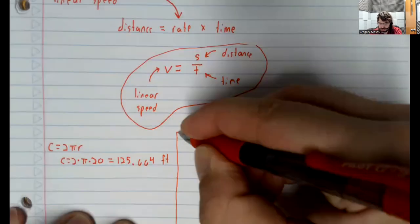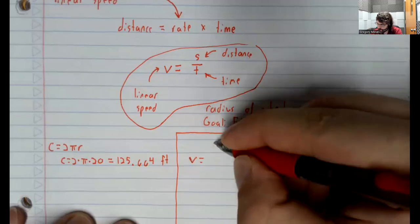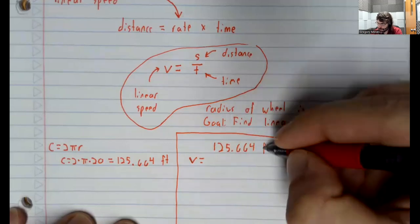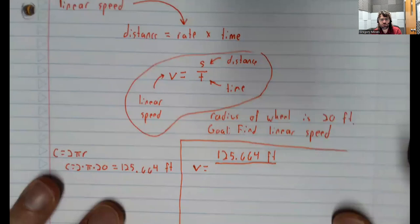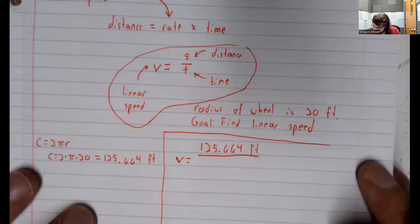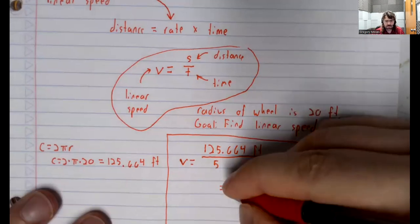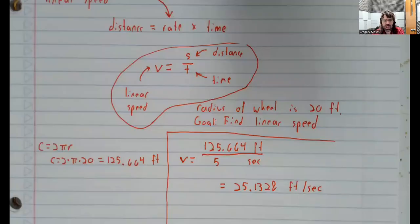The velocity is the distance a point on the wheel travels divided by the time it takes. We're looking at one full revolution of five seconds. And again, pausing briefly to do the division, we can find the linear velocity or the linear speed, I should say.